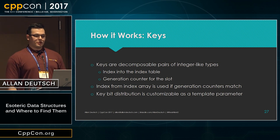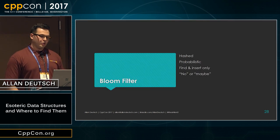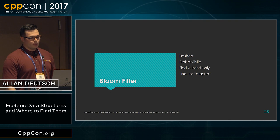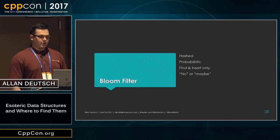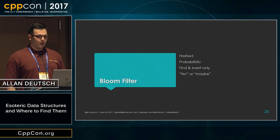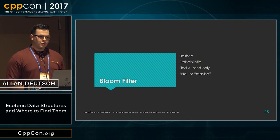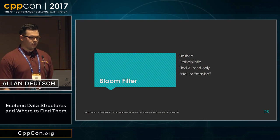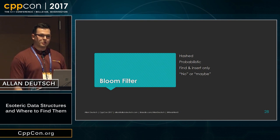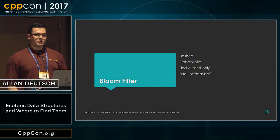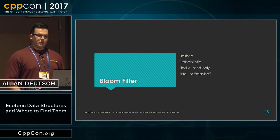The next data structure we're going to talk about is a bloom filter. Bloom filters are a really interesting hashing-based structure — they use up a fixed amount of memory. Rather than hashing the element and storing both the element and some sort of key, it's a probabilistic data structure, which means it doesn't always guarantee correctness, but it uses a lot less memory and gets pretty close. You can tune your error percentage with these.